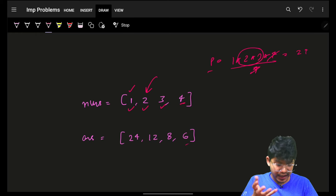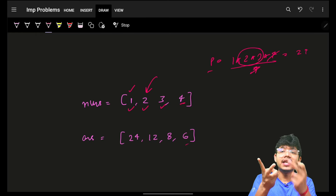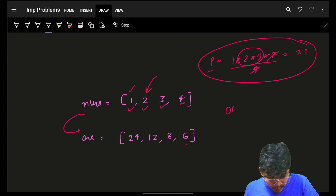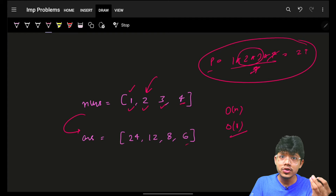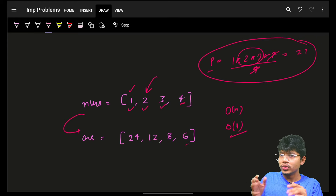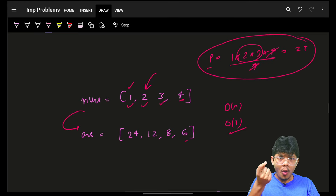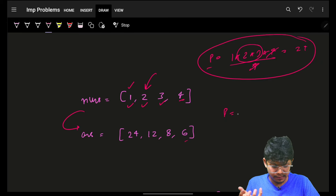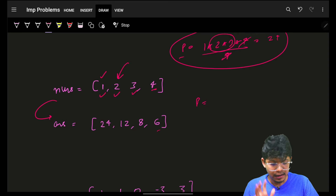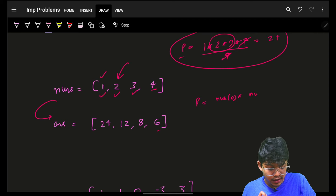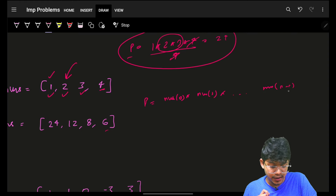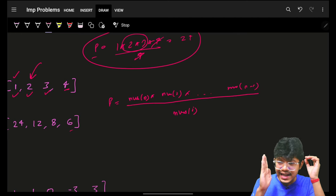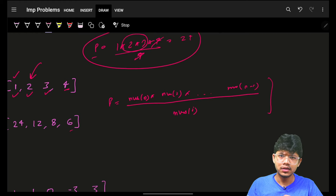This division approach takes O(n) time for the pre-computation and O(n) again to compute the answer array, with no extra space except a product variable. It would be O(1) space and O(n) time — the most optimal solution, right? But you need to ask the interviewer: what's the bottleneck? What's a possible case where this operation can fail?